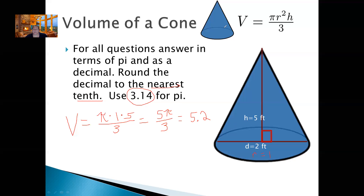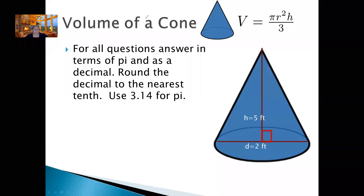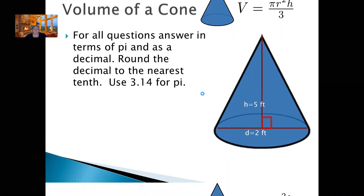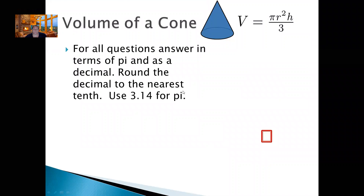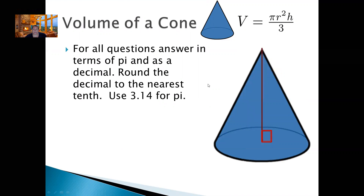Let's clear this out and go to the next one. Now I want you to try to do this one on your own. We're going to find the volume and round to the nearest tenth, using 3.14 for pi, with a height of 10 and a radius of 5. So go ahead and pause the video, try to work it out, and then come back.